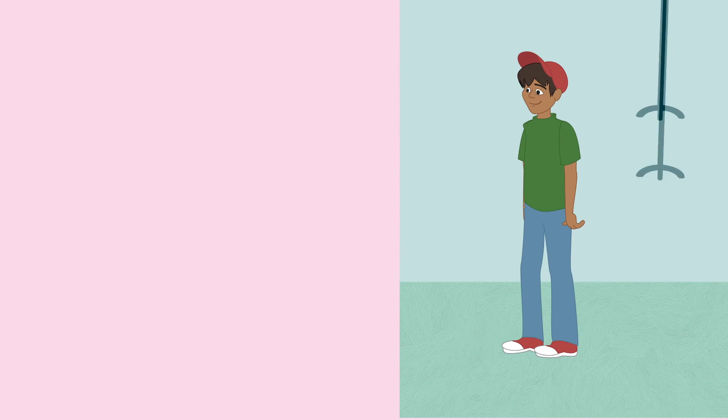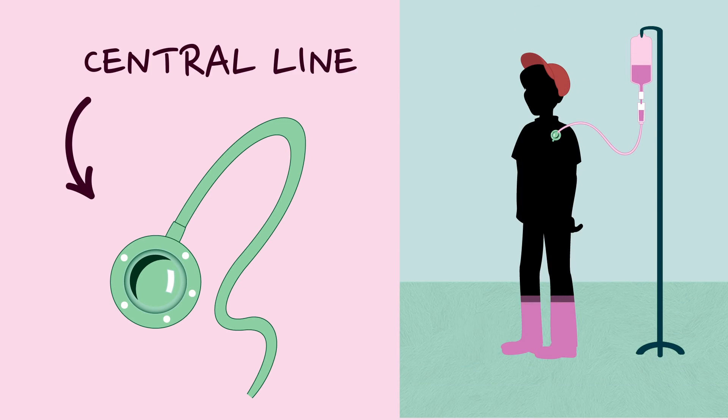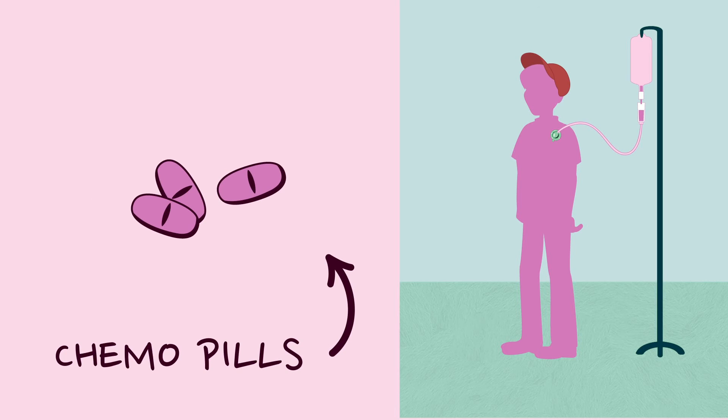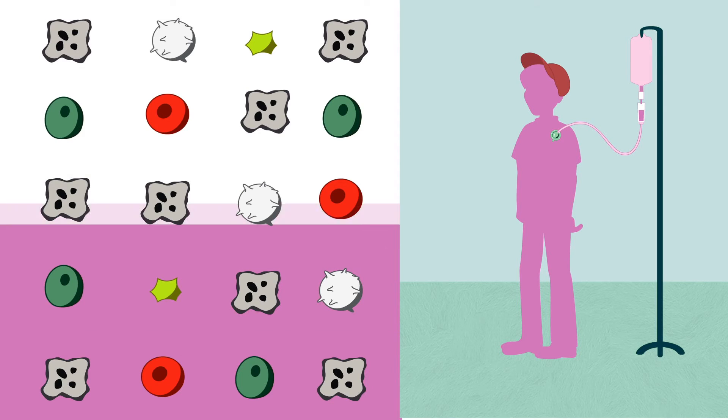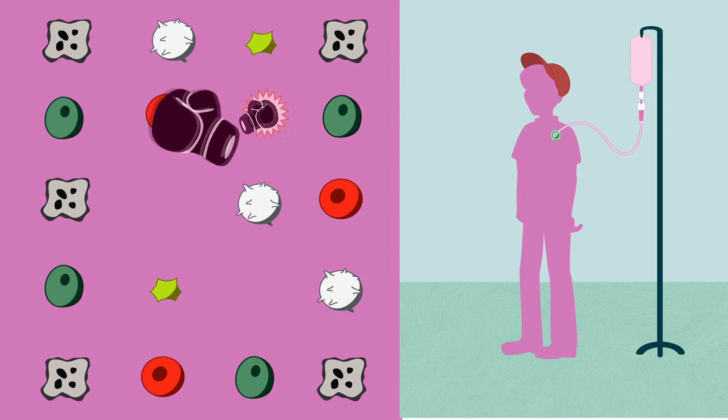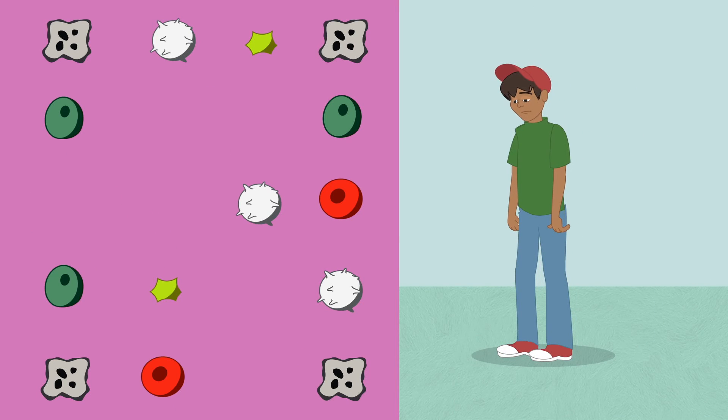To help you get better, doctors will give you medicines called chemotherapy to get rid of all the unhealthy cells. You can get this medicine through something called a central line or as a pill. The medicine is very strong and can destroy some healthy cells, too, which can make you feel tired and weak.